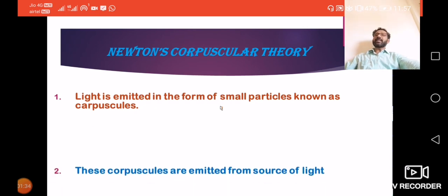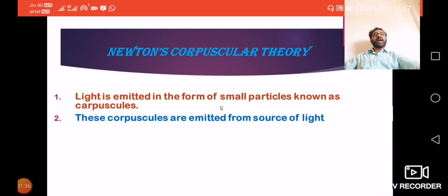Where do these particles or corpuscles come from? He told that these corpuscles are emitted from the source of light. A bulb is a source of light, torch hai, sun hai - these are different sources of light. And from the sources of light, these particles are emitted.